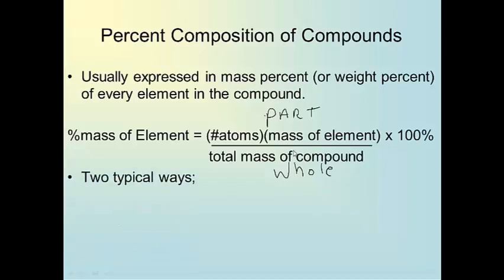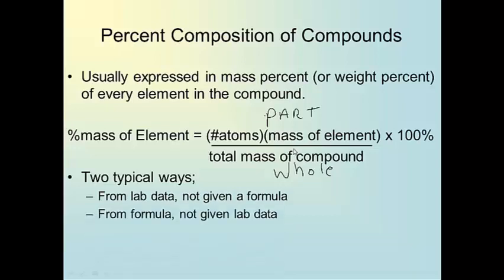There are two typical ways of making this calculation. Way number one is when they give you lab data, not the formula. Way number two is when they give you formula and not the data. Of the two, they're both very easy, so this is going to be a snap. Not to mention that you had it first in your chemistry anyway, so this is going to be real easy.